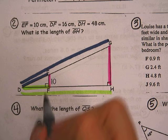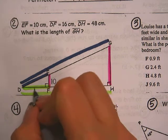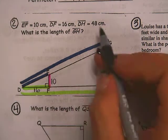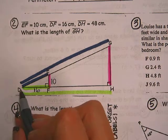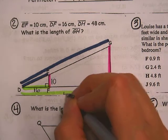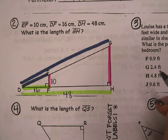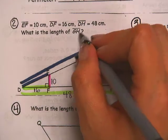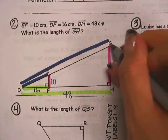It says DF, which is down here in green, is 16. And then DH is 48. D all the way to H, that's 48. Then it wants to know what is the length of GH. So we're looking for this length in pink.